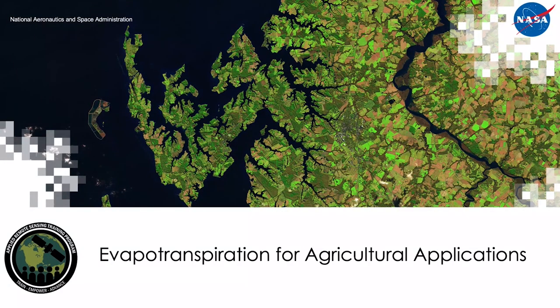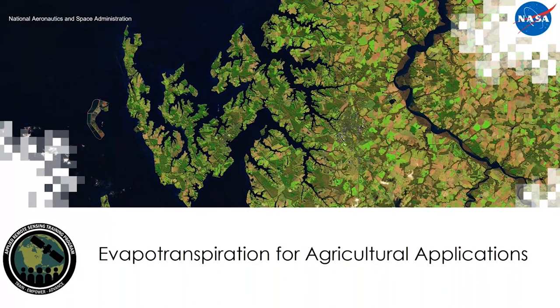I'll now turn the presentation over to Dr. Hain to present on evapotranspiration for agricultural applications. Thanks Sean for the introduction. I'm Dr. Christopher Hain, a research scientist at the Marshall Space Flight Center in Huntsville, Alabama. I've been working on land surface remote sensing with a focus on evapotranspiration, drought, and agricultural applications for most of my career. Today I'll give you a presentation on applications the community has developed for monitoring evapotranspiration and derivative products from these models for agricultural applications related to evapotranspiration and drought.